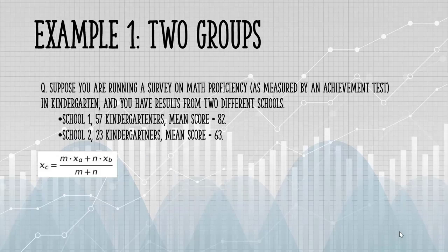In this first example, we'll look at two groups. Suppose you have a survey on math proficiency with results from two different schools.